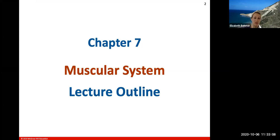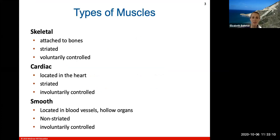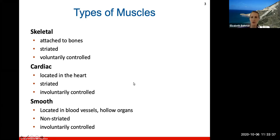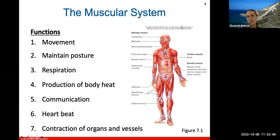Welcome back to Chapter 7 on muscles — the muscular system. There are three types of muscles throughout your body: skeletal muscles, cardiac muscles, and smooth muscles. Skeletal muscles are attached to bones and you control these voluntarily. Cardiac muscles are located in the heart and smooth muscles are in the walls of hollow organs. Cardiac and smooth muscles are involuntarily controlled — your heart will keep beating without you telling it to. Striated and non-striated refer to the appearance of stripes in these different muscle types.